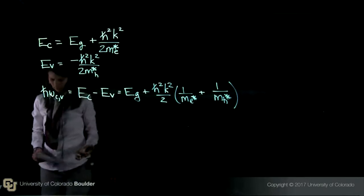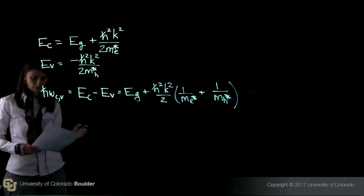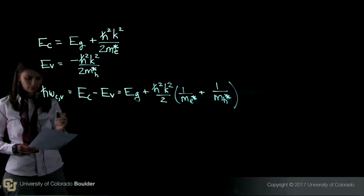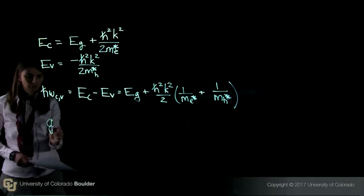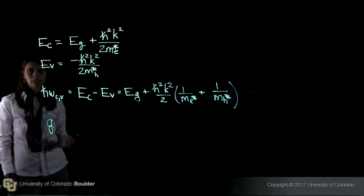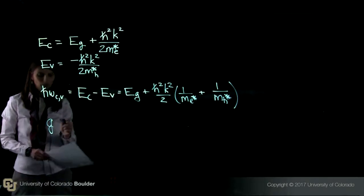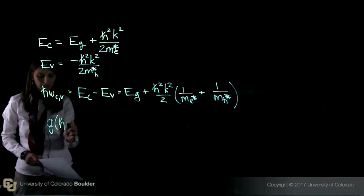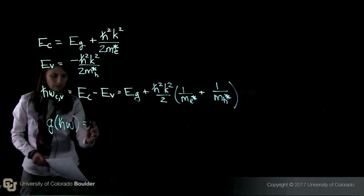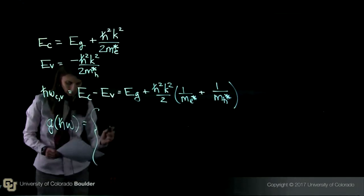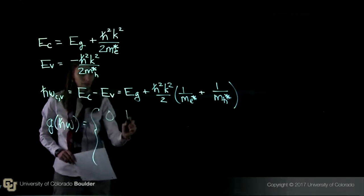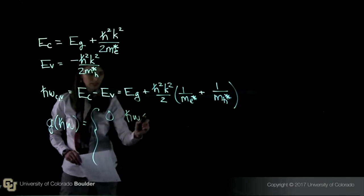So now we can write down an expression for the joint density of states. Because remember, once we have the E versus k, it's very easy for us to calculate the density of states. So g of h-bar omega, we'll first take the easy case. It equals zero when the energy of my photon is less than E_g.